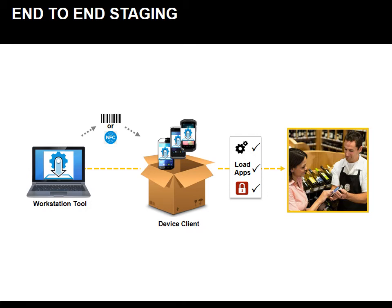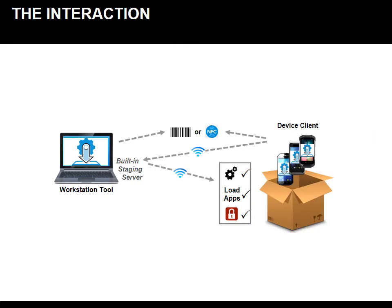Let's take a closer look at the interaction between the workstation tool and the device client. Workstation tools create profiles that then generate barcodes and NFC tags. Devices scan the barcodes and NFC tags in order to connect to the network. Once connected to the network, devices automatically connect to the built-in staging server of the workstation tool. This built-in staging server comes out of the box with the installer for the workstation tool.